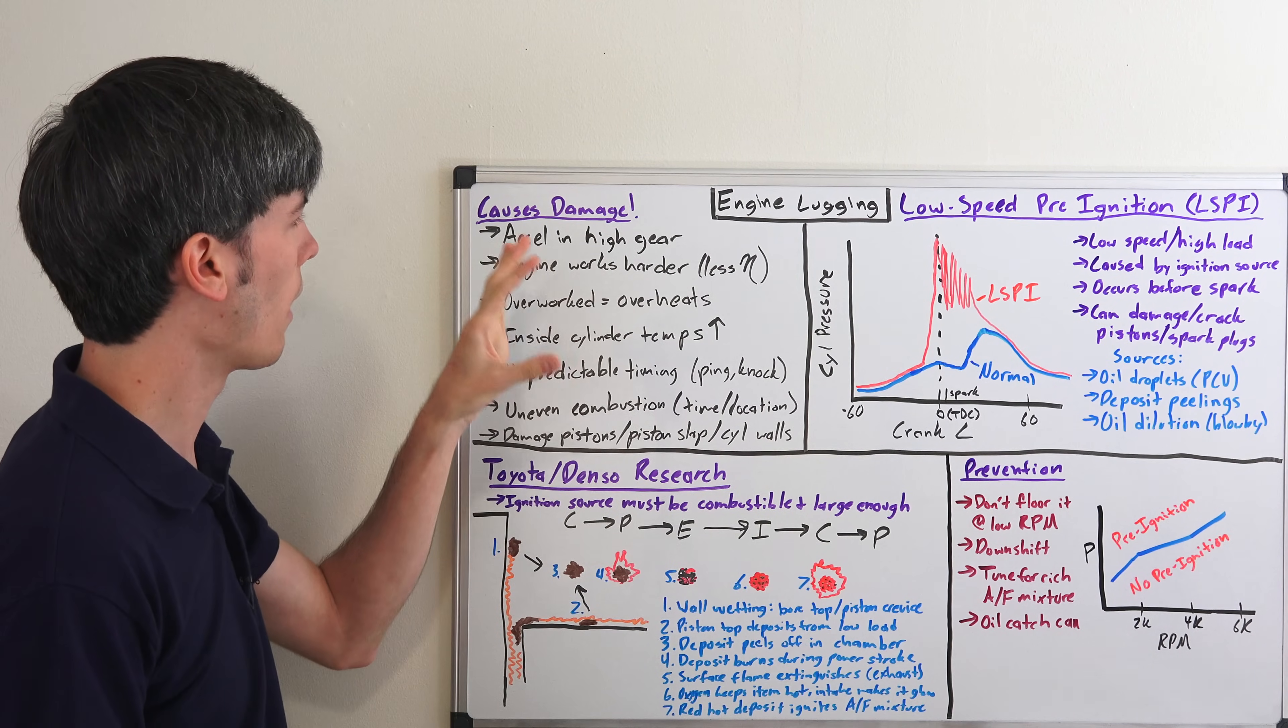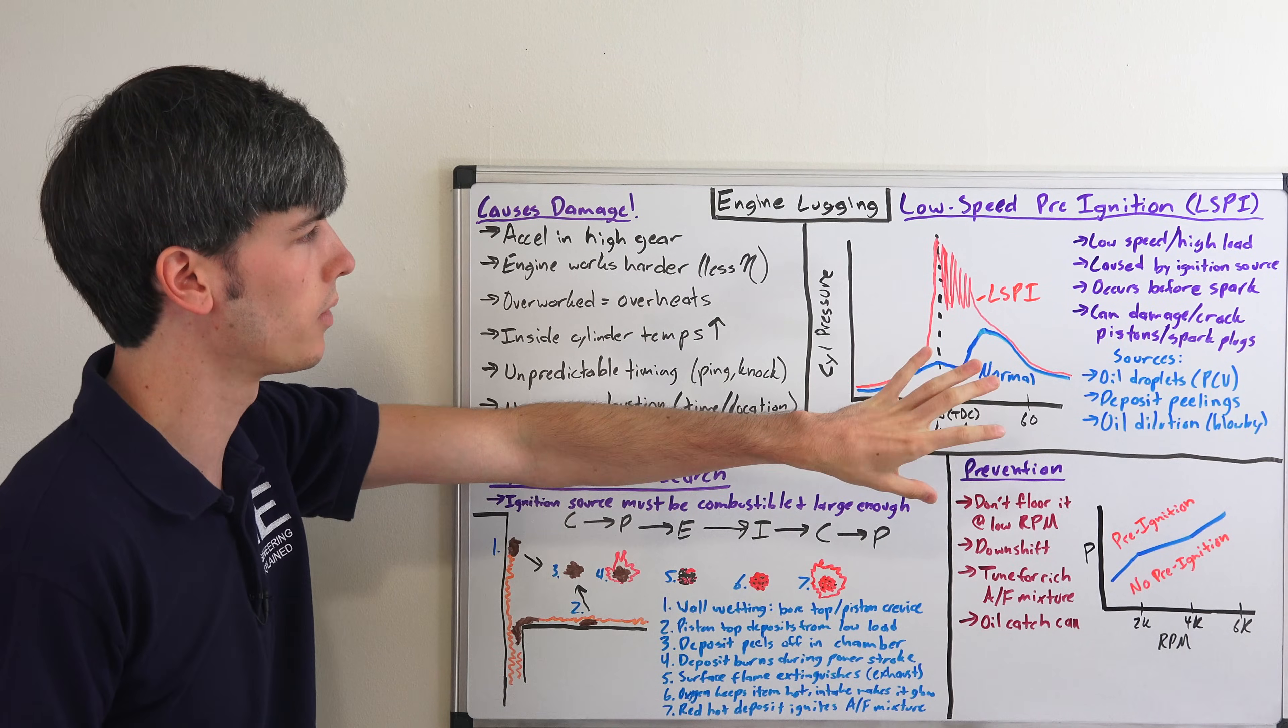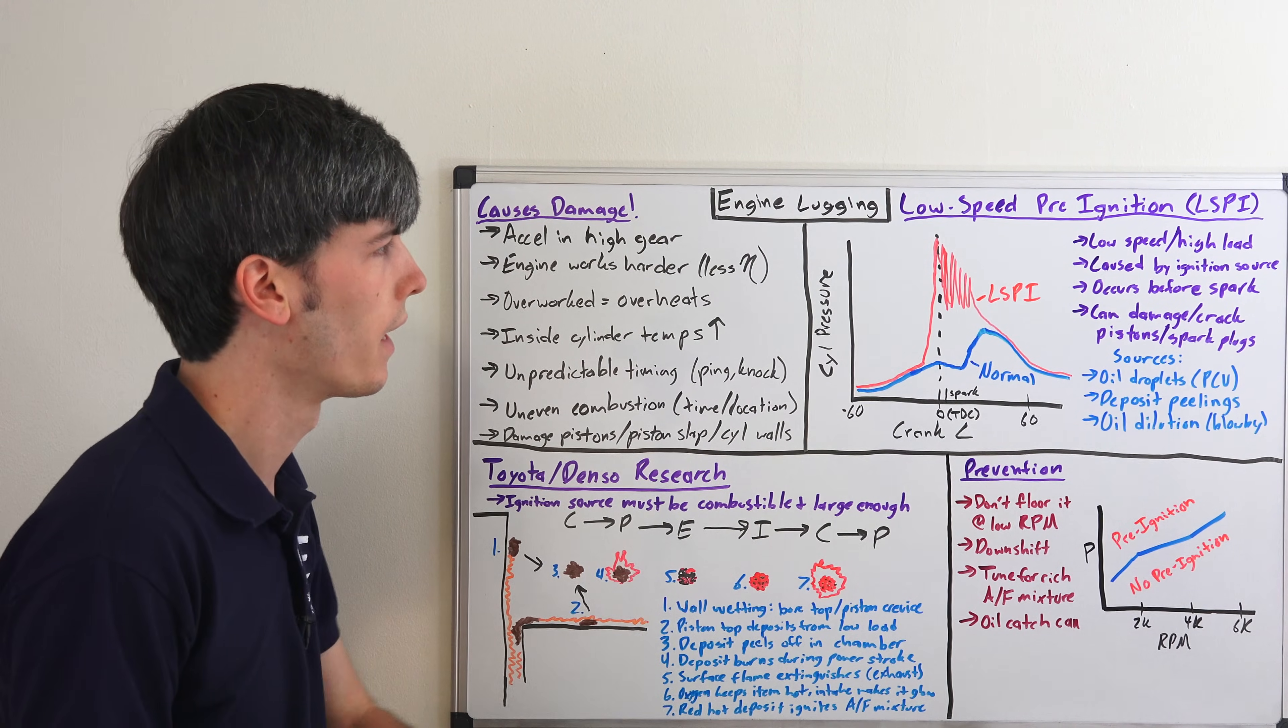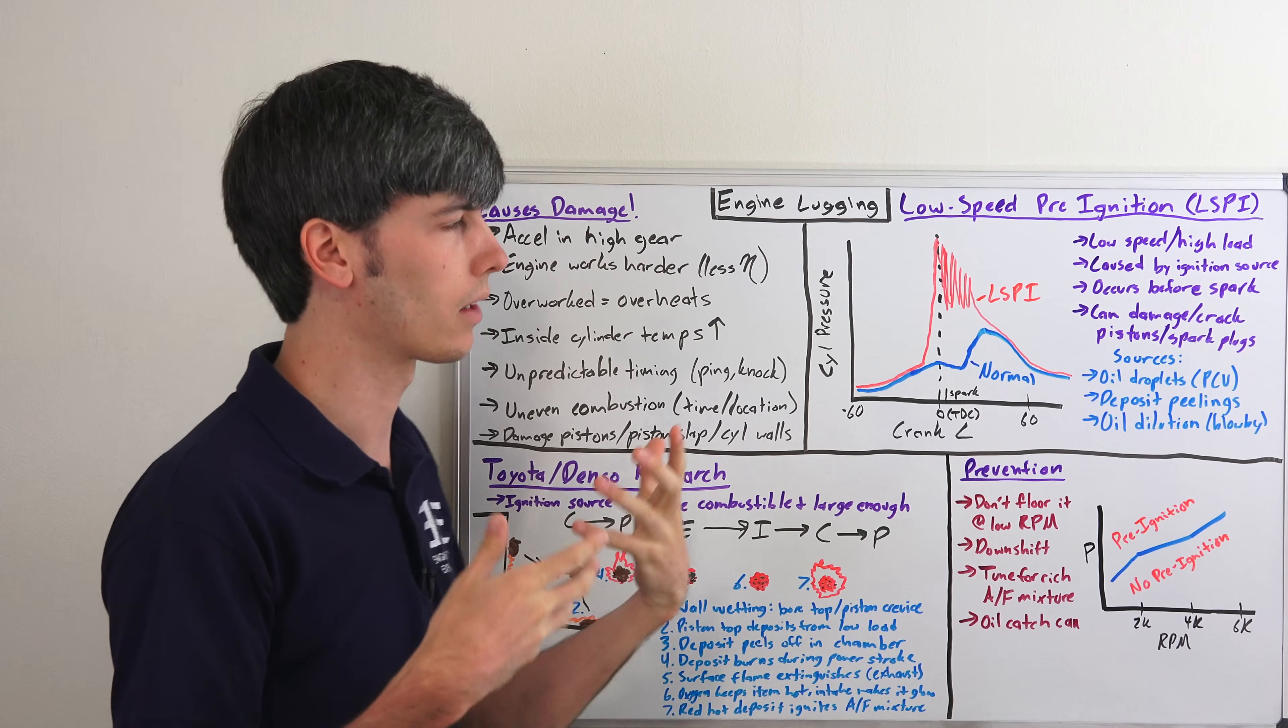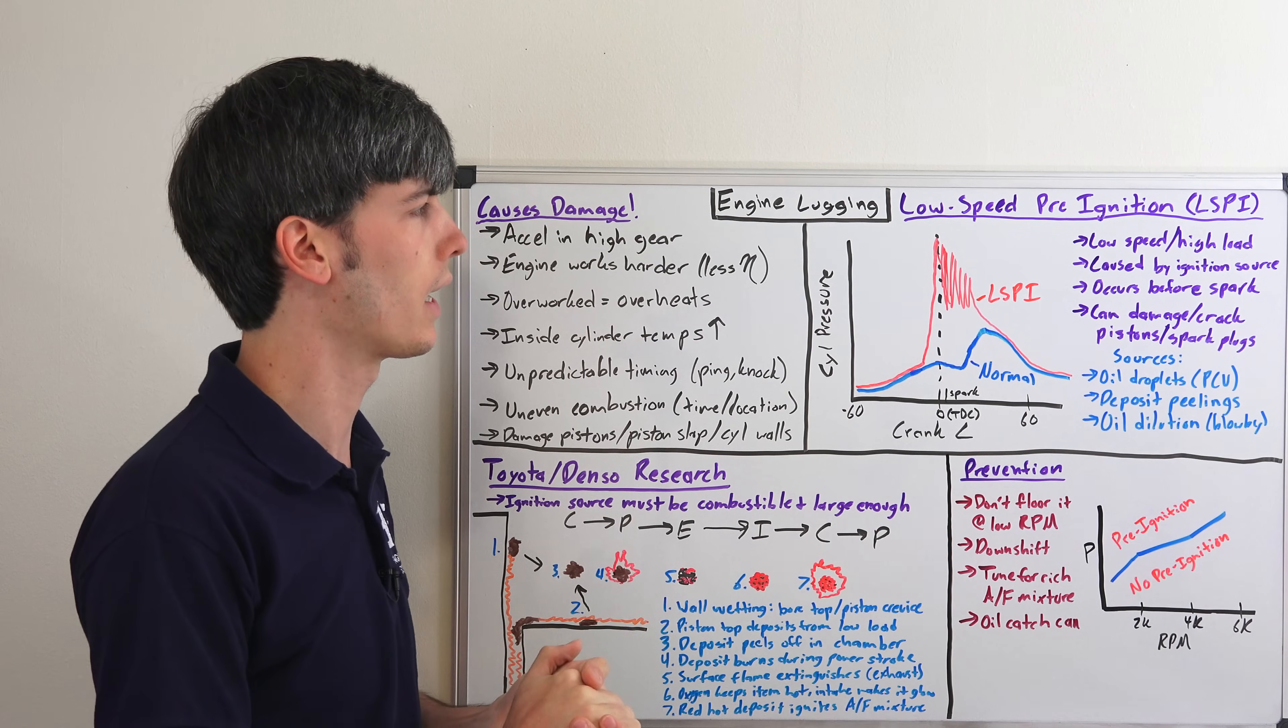That's kind of how this will cause damage in pretty much any engine. This gets into more of small turbocharged engines - low speed pre-ignition. What is low speed pre-ignition? This is when you have ignition occur before your spark at a low speed, a low engine RPM with a high load, for example when you're flooring it.